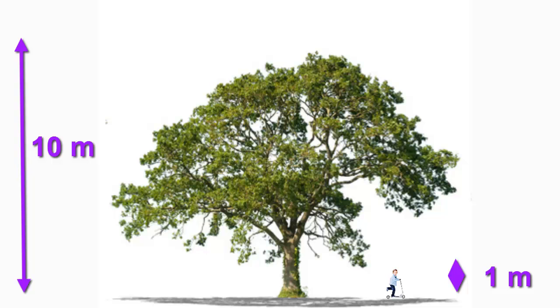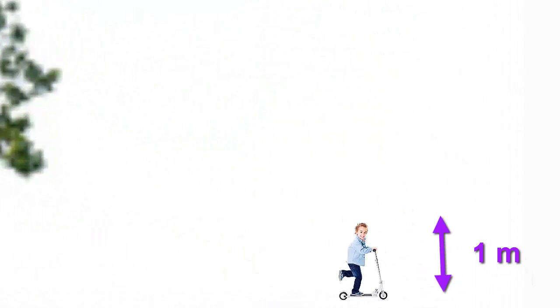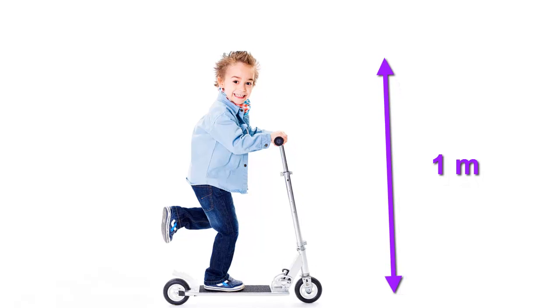We'll now zoom in using a magnifying power of 10 and that will make Lee's image about the same height as the tree was on the screen before. In this video we'll continue to find smaller and smaller objects and zoom into them in a series of steps until finally we can see an atom.